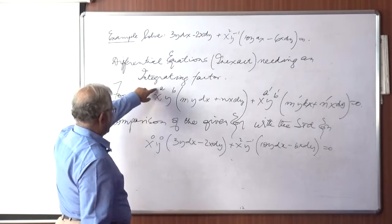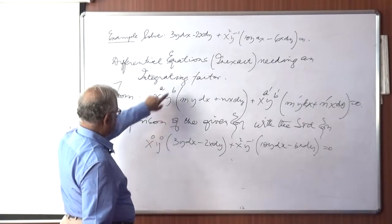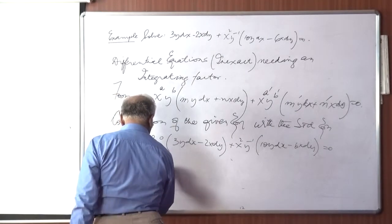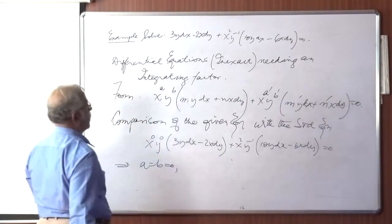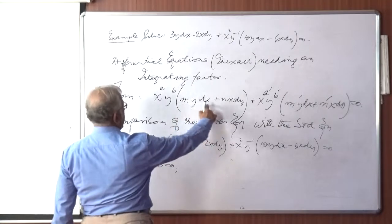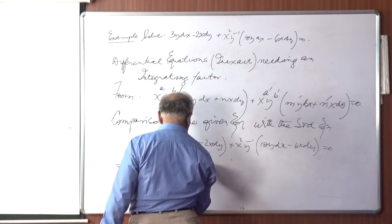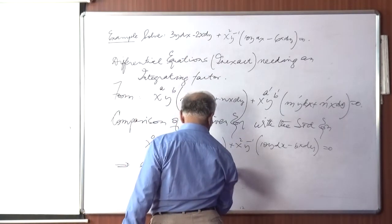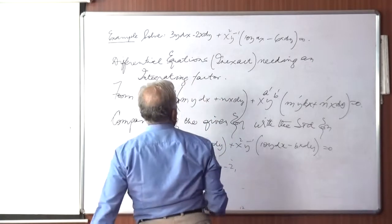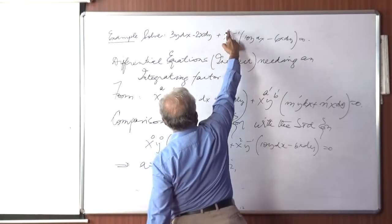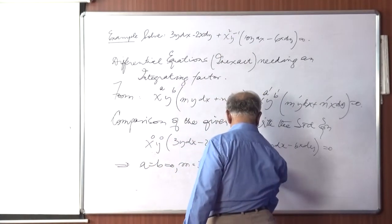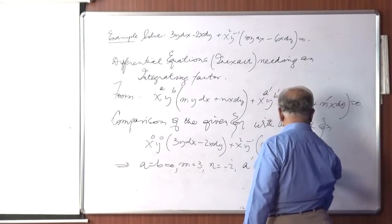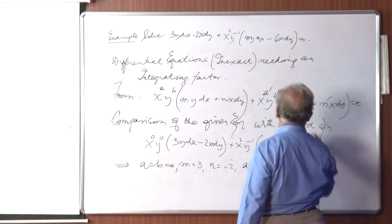From this comparison we get: a = 0, b = 0, m = 3, n = −2, a' = 2, b' = −1, m' = 10, and n' = −6. These are the results of comparing the given equation with the standard one.